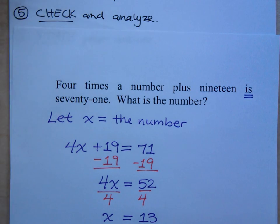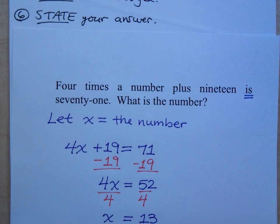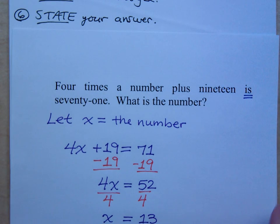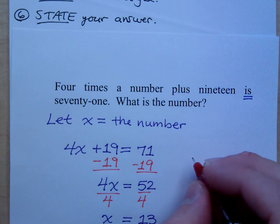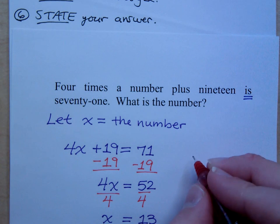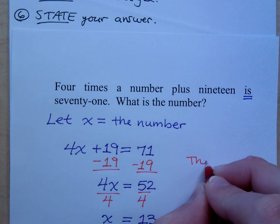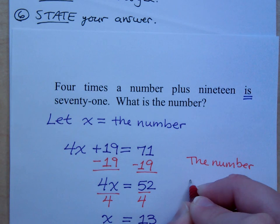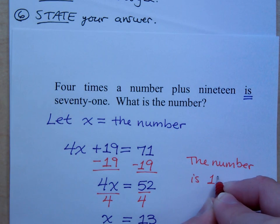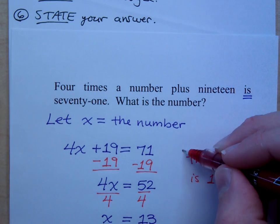Now the last step says to state your answer. The question is asking, what is the number? So what do you say? X equals 13. We don't want to say X equals 13, but writing a sentence we might say, how do you respond to what is the number? The number is 13. We'll say that the number is 13. That is how we would state our answer.